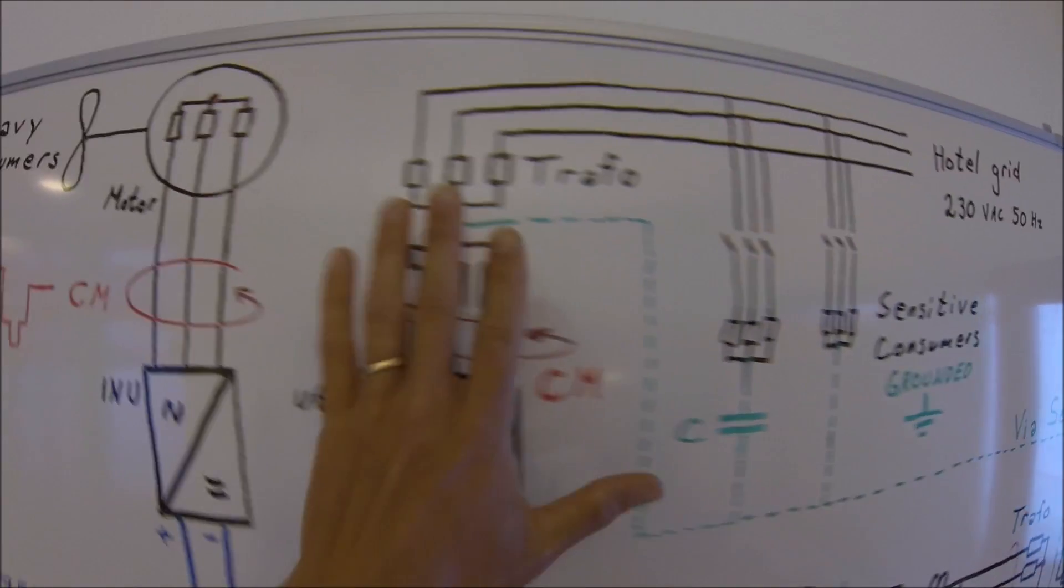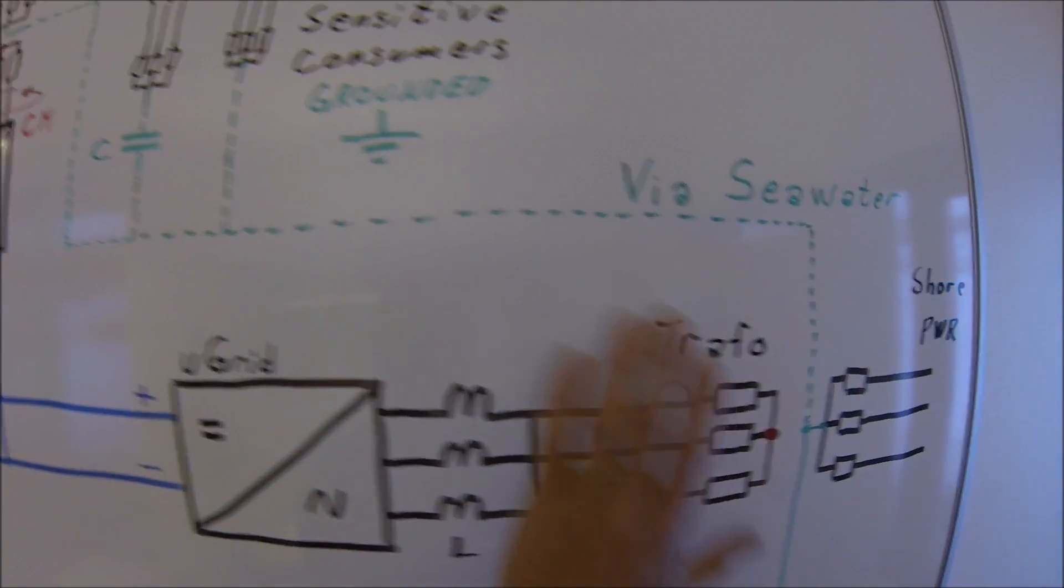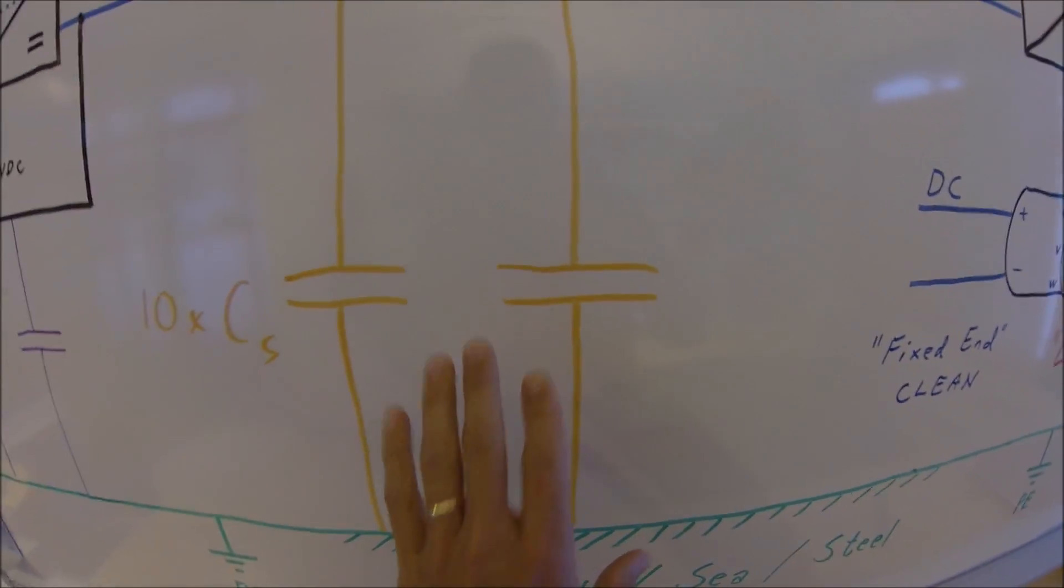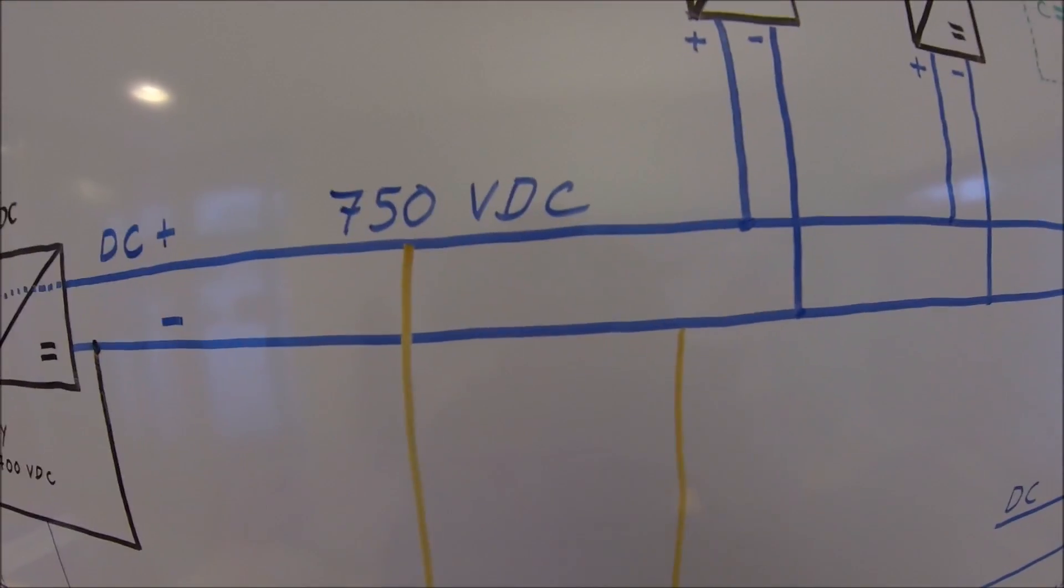The total stray capacitance in all these cables and transformers should be one tenth of the capacitors that we install on the DC bus.